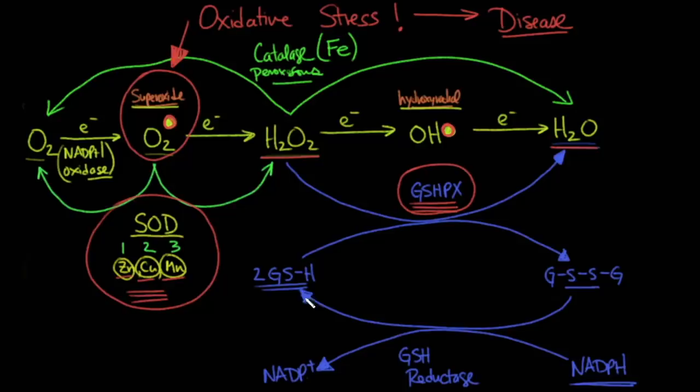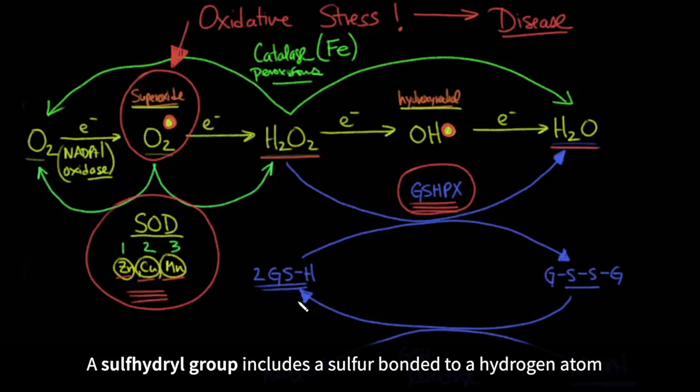That oxidized form gets regenerated back by taking the reduced form of NADP+, which is NADPH, and converting it into NADP+, through an enzyme called glutathione reductase. So there are other ways of reducing glutathione from its disulfide bond form back into its sulfhydryl group form.